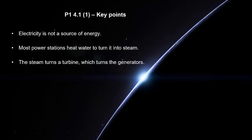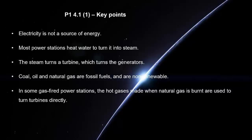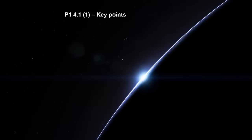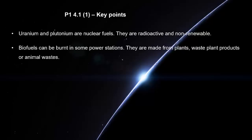The steam turns a turbine which turns the generators. Coal, oil and natural gas are fossil fuels and are non-renewable. In some gas-fired power stations, the hot gases made when natural gas is burnt are used to turn turbines directly. Uranium and plutonium are nuclear fuels. They are radioactive and non-renewable. Biofuels can be burnt in some power stations. They are made from plants, waste plant products or animal wastes. Biofuels are renewable resources.